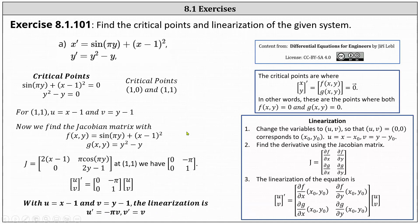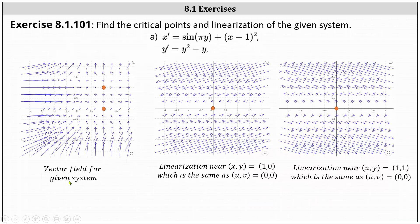Before we go, let's look at this graphically. On the left, we have the graph of the original vector field. Notice this does verify we have critical points at one comma zero and one comma one. The graph in the middle shows the linearization near the point x comma y equals one comma zero, which is the same as u comma v equals zero comma zero. In the last graph, we have the linearization near x comma y equals one comma one, which is the same as u comma v equals zero comma zero. Remember, when looking at the linearizations, the critical points will always appear at the origin. Analyzing the slope fields for the linearizations, notice how they are pretty good approximations near the critical points of the original vector field.